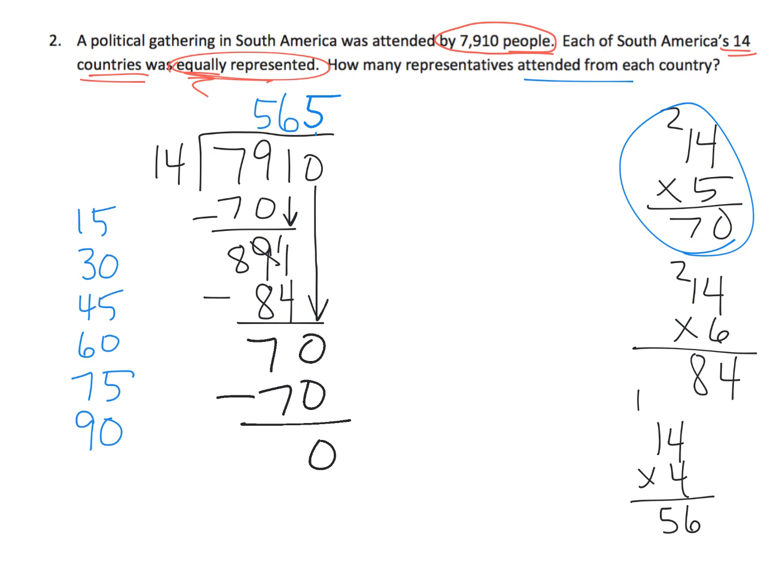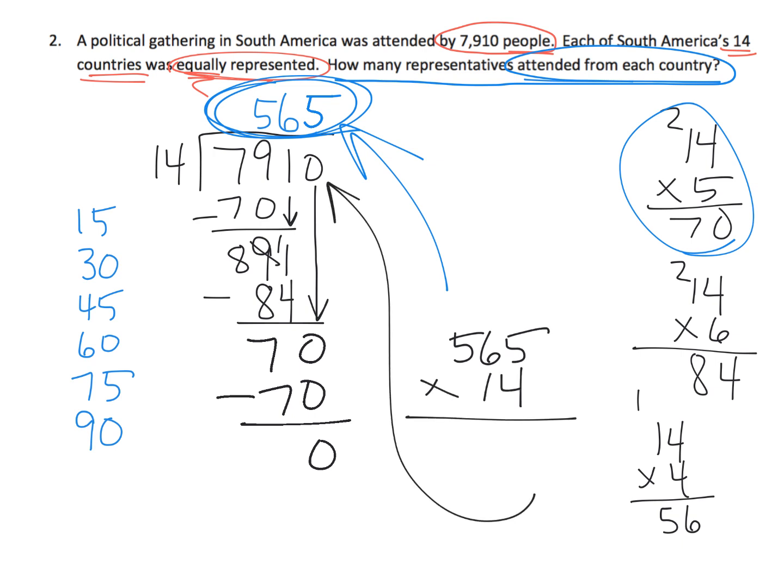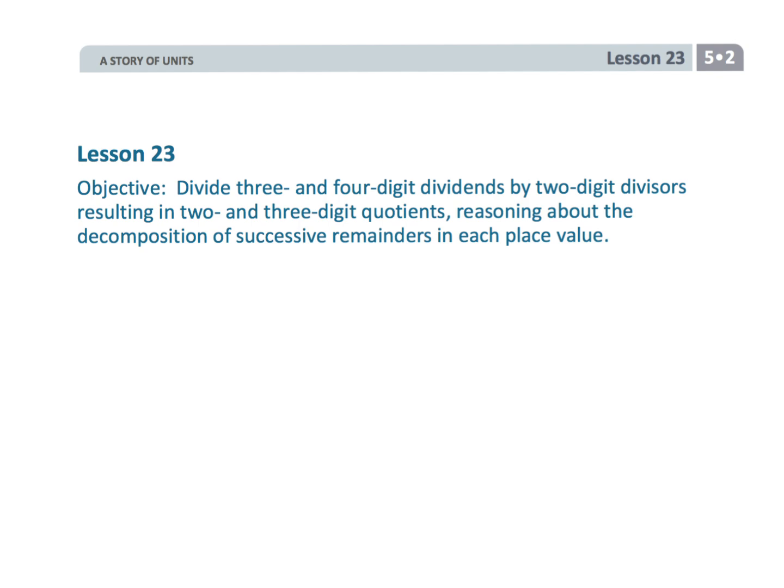So what's the question? How many representatives attended from each country? And the answer is 565 people attended from each country. Ideally I should check by multiplying, 565 multiply by 14 to just make sure that I get 7,910, but I'm going to leave that up to you parents and teachers and students to do that. And that wraps up 5th grade module 2 lesson 23, dividing big ol' huge problems.